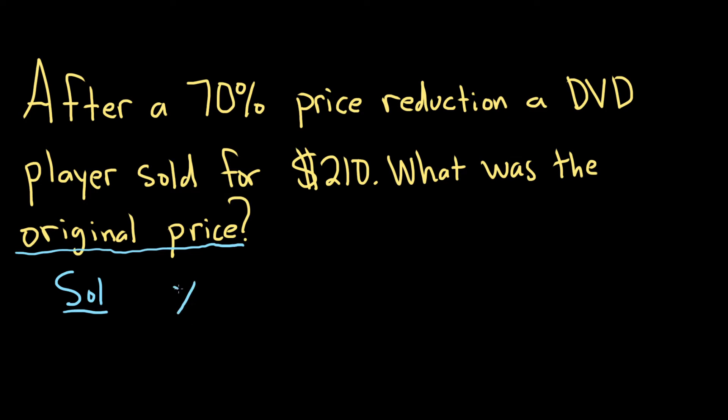So we let X be what we're looking for. So X is the original, so OG price. OG means original. All right, so we're looking for the original price.